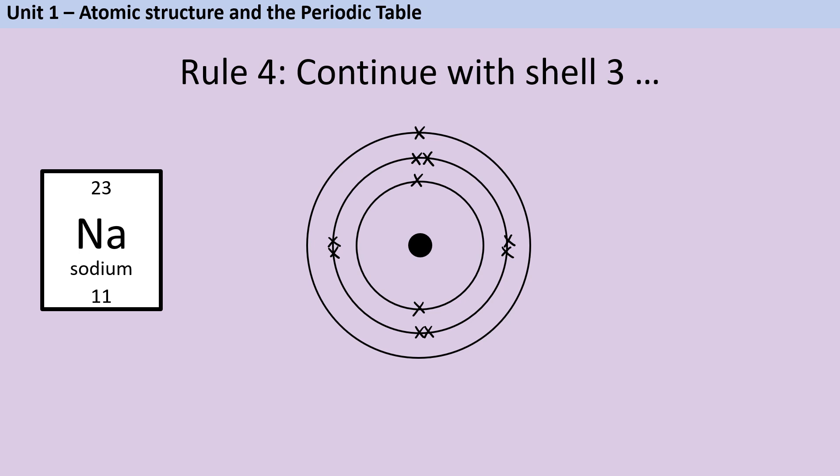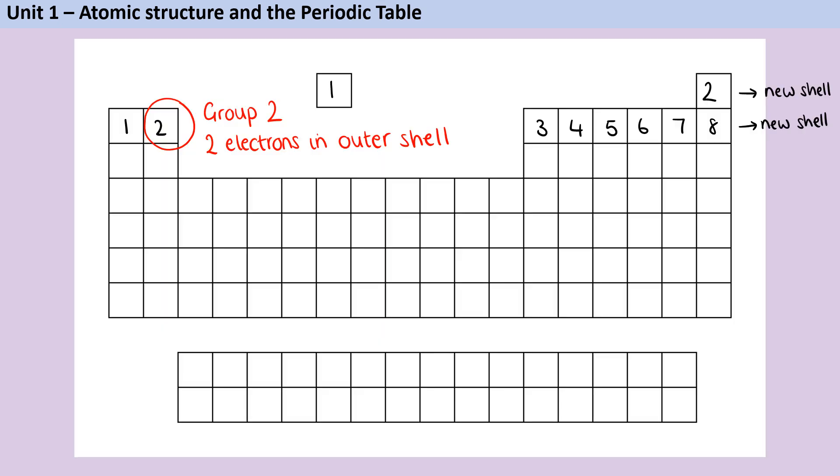Now that we've had eight electrons in our second shell it must be time to start shell three with sodium which is going to have two electrons followed by eight electrons followed by a single electron. If we look back at period three, that third row, then again we can see that there are eight elements and therefore we're going to add eight electrons to shell three before we can start shell four.